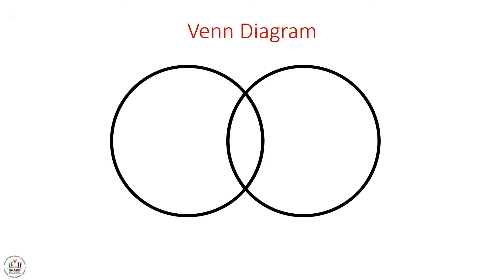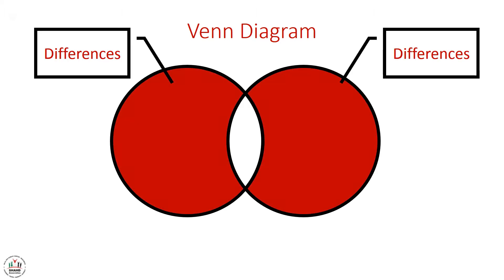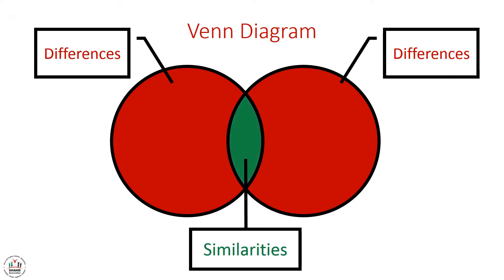Today we are going to compare and contrast. First of all, let's think about the Venn diagram. The Venn diagram is represented by two intersecting circles. In the red part, we write the differences between two things, and in the green part, we write the similarities. In the next slide, we will talk about differences and similarities.